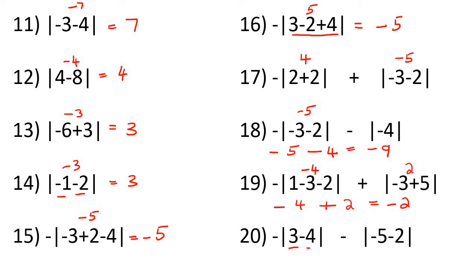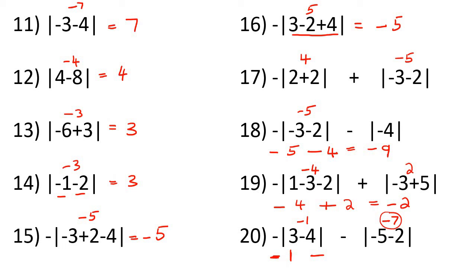Last question. There's a negative in the front, so we write that down. Then 3 minus 4 is negative 1, but the absolute value of negative 1 is just 1. Then we say minus, and minus 5 minus 2 is minus 7, but the absolute value of minus 7 is positive 7. Some of you might wonder why there's still a negative — remember, that negative was already there from the front. So minus 1 minus 7 is minus 8.